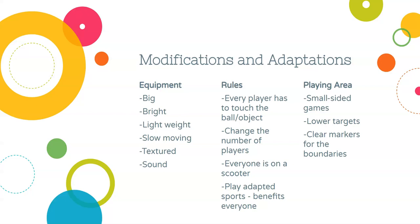Some modifications and adaptations you can make to your classroom to help students be more successful fall into three main areas, the first being equipment. You want to use equipment that is big and bright so it's easier for people to see. For students with visual impairments, bigger and brightly colored equipment, or equipment that contrasts the background, is very important — for example, you don't want to use a giant white volleyball in a gym with all white walls.